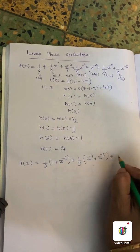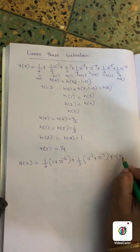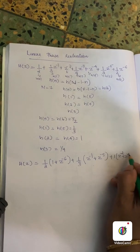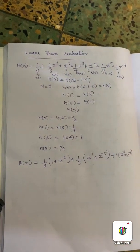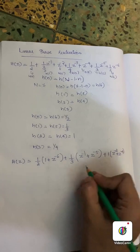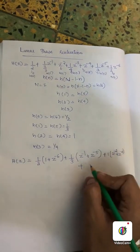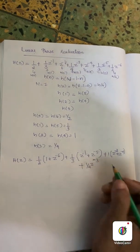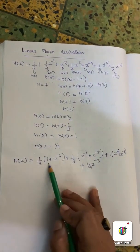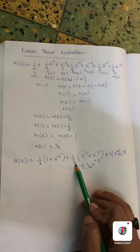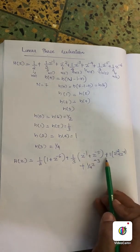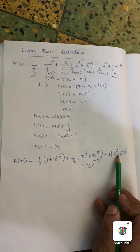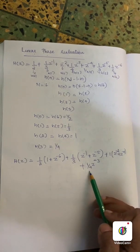H(z) equals the sum of symmetric pairs: 1 into (z raised to minus 2 plus z raised to minus 4), plus 1/4 z raised to minus 3, plus 1/2 into (z raised to minus 1 plus z raised to minus 5), plus 1 into (z raised to minus 2 plus z raised to minus 4), plus 1/4 into z raised to minus 3.